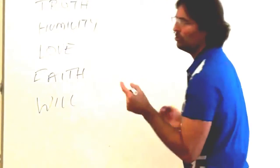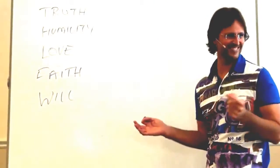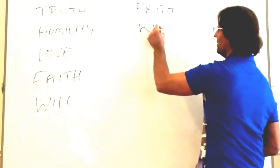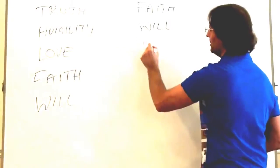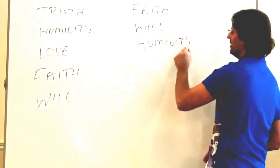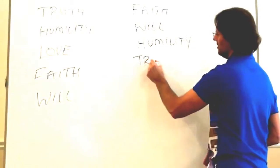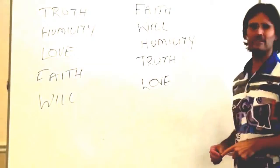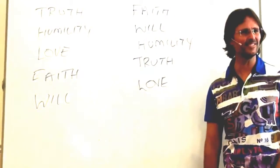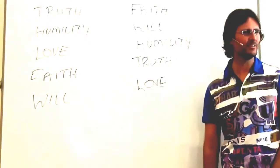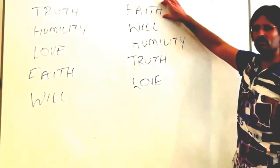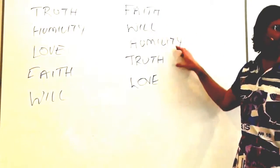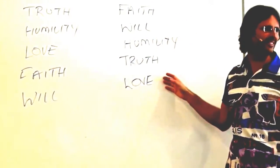Okay, so let's put them in the order that I feel we need to engage them, shall we? Faith, will, humility, truth, and love. Why do you reckon I've used that order? Well, firstly, if you don't have any faith at all, it's highly unlikely you will use your will to be humble, receive some truth, and want to be more loving. Does that make sense?